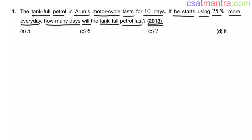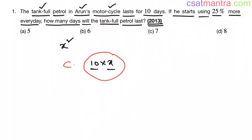It is given that Arun's motorcycle tank is full. Let's say Arun uses x liters of petrol every day. Now for 10 days he would use 10 into x. This is the tank's capacity — full tank petrol lasts for 10 days, he uses x liters per day, so for 10 days it is 10 into x. This is the tank's capacity.